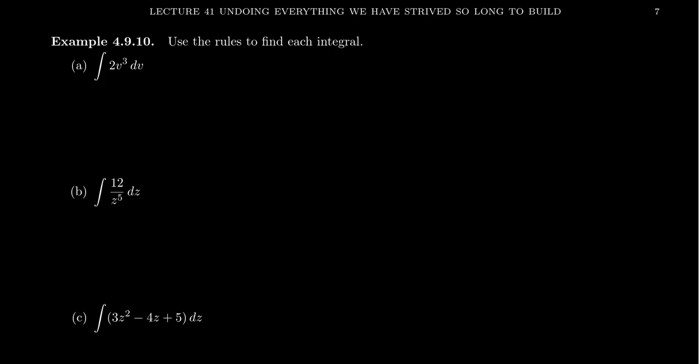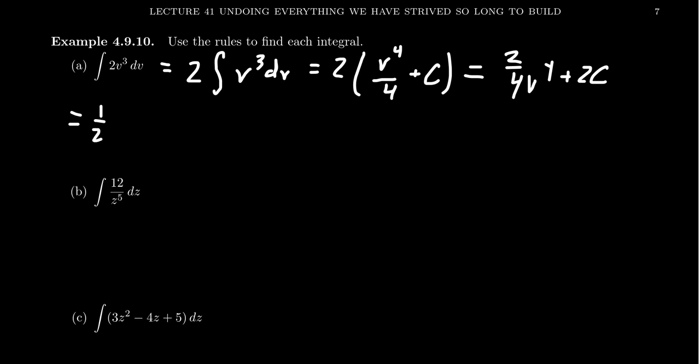Let's see some examples of how we can use this linearity property to help us calculate some integrals. So take the integral 2v cubed. Well, by the constant multiple rule, we can take the two out. We get v cubed dv. And then by the power rule, its antiderivative will be v to the fourth over four plus a constant, which if you distribute that two through, you get two over four v to the fourth plus two times a constant. That simplifies just to be one half v to the fourth plus a constant.